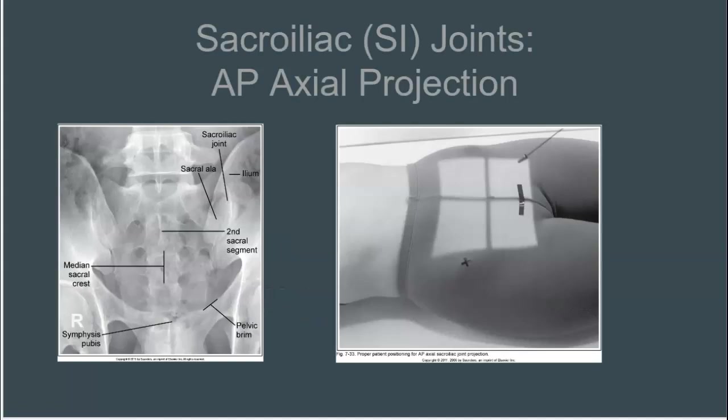Image analysis guidelines state that the median sacral crest should be aligned with the symphysis pubis. The sacrum is at equal distance from the lateral wall of the pelvic brim on both sides. SI joints are demonstrated without foreshortening. The sacrum is elongated, and the pubic symphysis superimposes the fifth sacral segment.